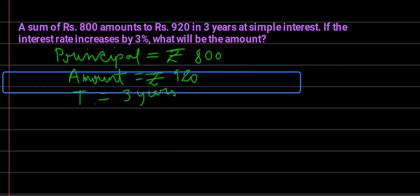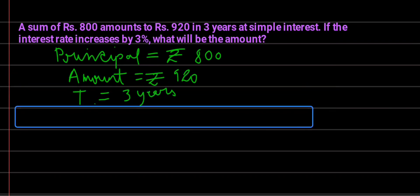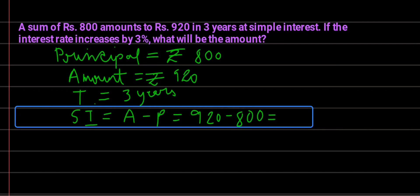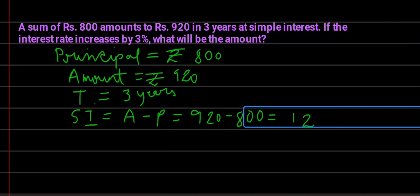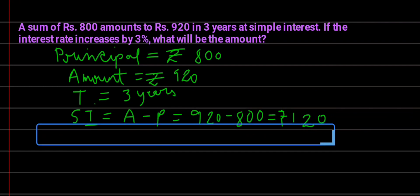First, find the simple interest. Since you are given the principal and the amount, simple interest equals amount minus principal, which is 920 minus 800, giving us 120 rupees.